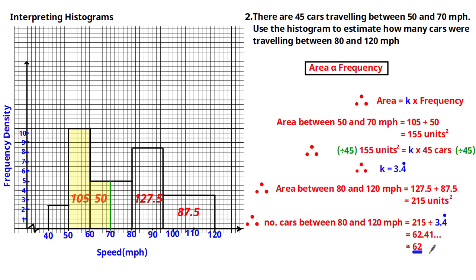As noted, you could have chosen any appropriate scaling for the frequency density axis. Whilst it would give you a different value of k, you would get exactly the same final answer. I suggest you try a different scaling to verify you get the right answer.